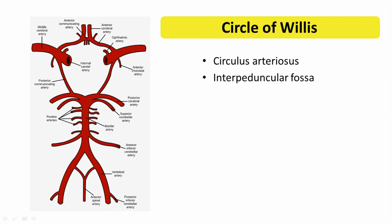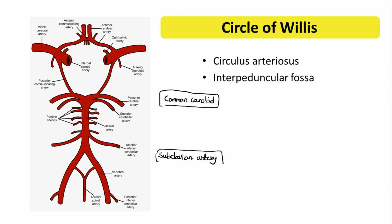Let us see what major branches give rise to the circle of Willis, beginning from the common carotid artery. The common carotid artery takes origin from the aorta. The aorta gives rise to two arteries: the common carotid artery and the subclavian artery. The common carotid artery gives rise to the internal and external carotid arteries. This internal carotid artery is the major supply to the brain — it goes inside the skull and supplies the major part of the brain.